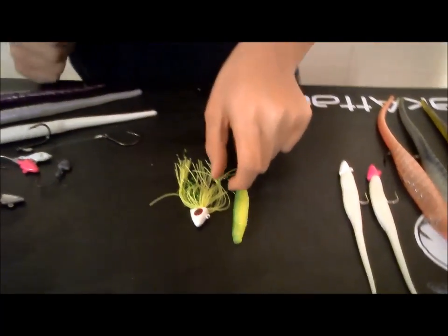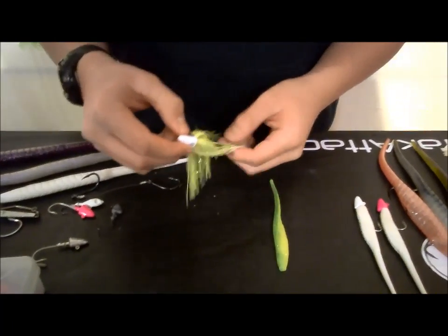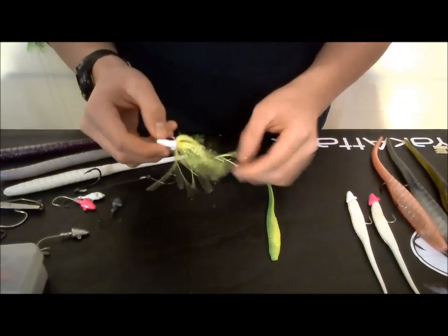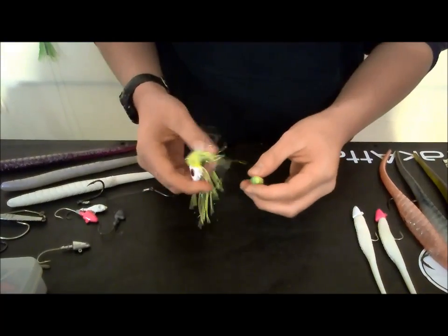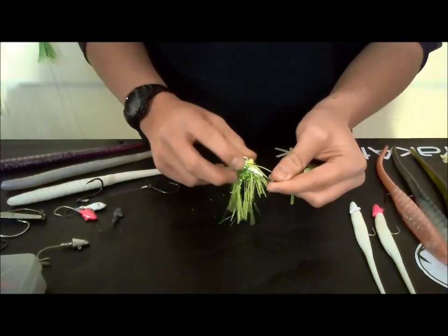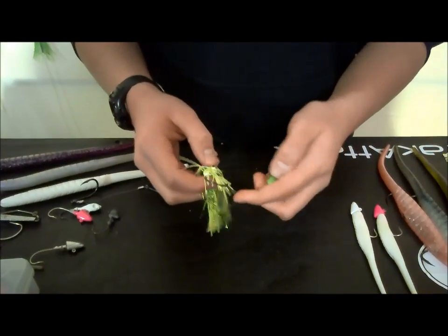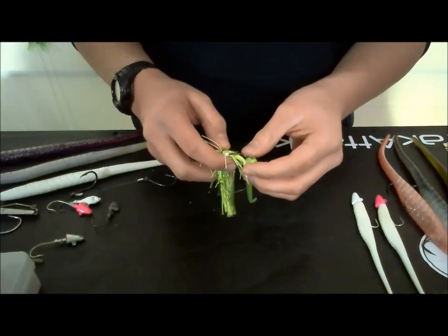Alright, so next we're going to do a bucktail kind of setup here. This has a silicone skirt to it, and it's green in color, which matches this two-tone green BKD. I cut a little bit of the tip off so that way it kind of fits flush up against here, and there isn't so much pointiness on this.